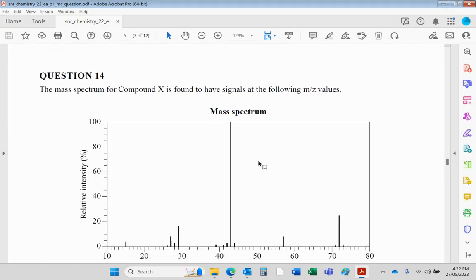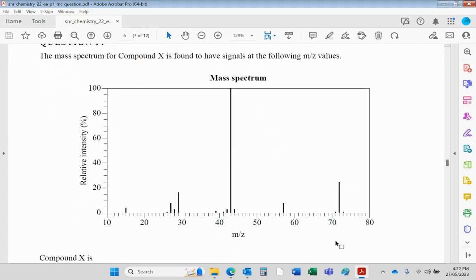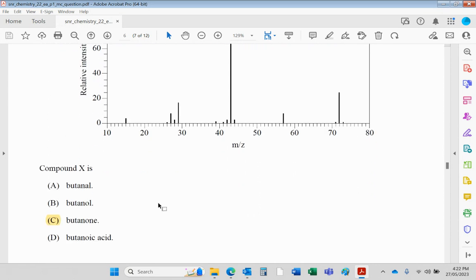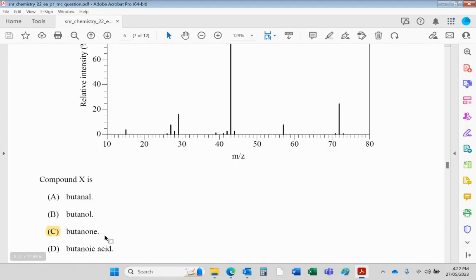Mass spectrum for compound X has signals at these values here. The value at 72 indicates the molecular mass. That rules out the alcohol because that would be 74, and the carboxylic acid would be 88. So it's got to be either the aldehyde or the ketone. And the fact it's got a big peak at 43 is telling you it's the CH3CO unit, which is only present in butanone.